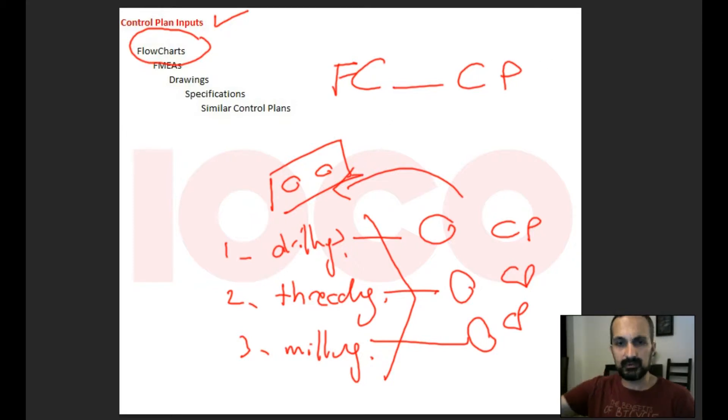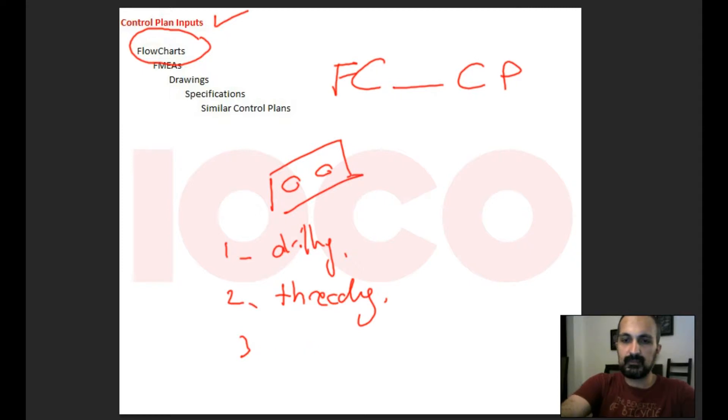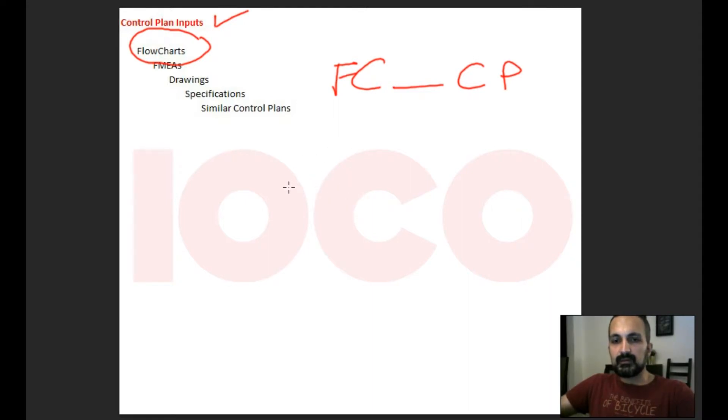The same issue is with the FMEA. Please remember the FMEA logic: we make risk evaluation for calculating the risk priority number, the RPN. So severity, occurrence, and detection.